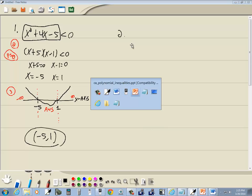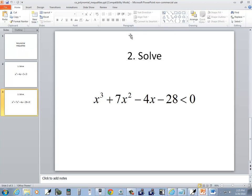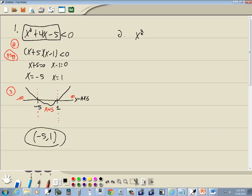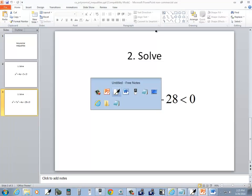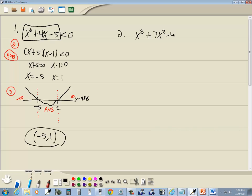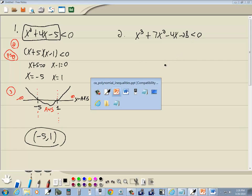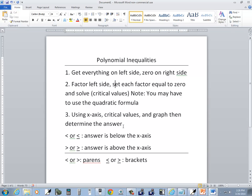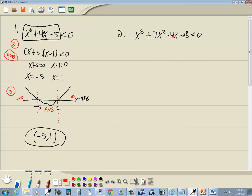Let's take a look at another example. We get x to the third plus 7x squared minus 4x minus 28 is less than 0. Okay. First step. Get everything on the left side, 0 on the right side. Now that's done.